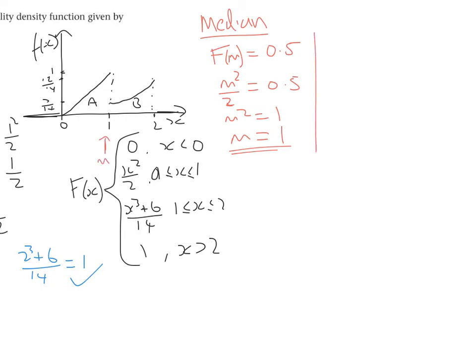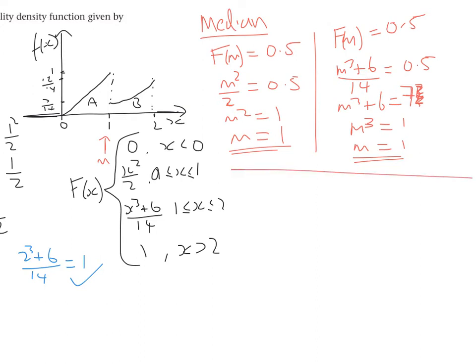And we can also show that in the other function, in the second function. So if I say that F of the median is 0.5 and I use it in the second function, one is in both of these functions, so it's going to work for either of them. So we're going to have M cubed plus 6 over 14 equals 0.5. So M cubed plus 6 equals 7. And then M cubed equals 7 minus 6, which is 1. So the median again is 1. So it's just a case of making your function equal to the value that we want.